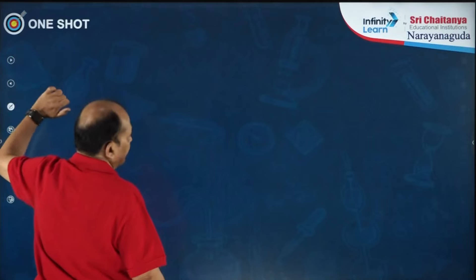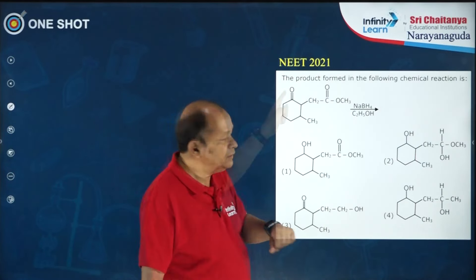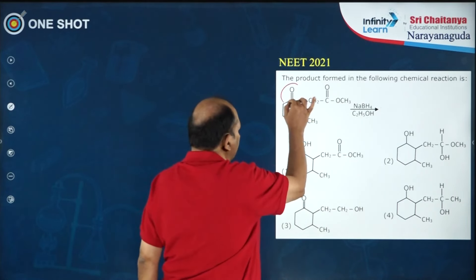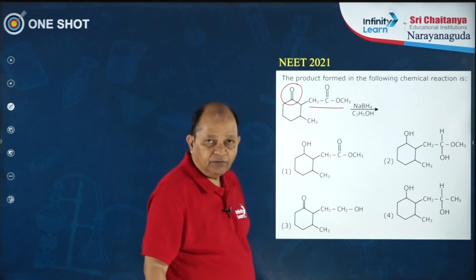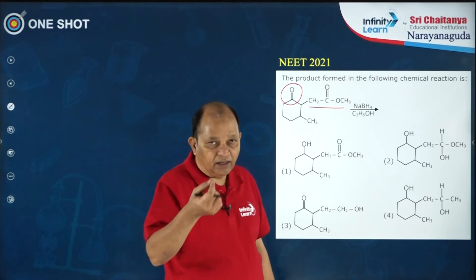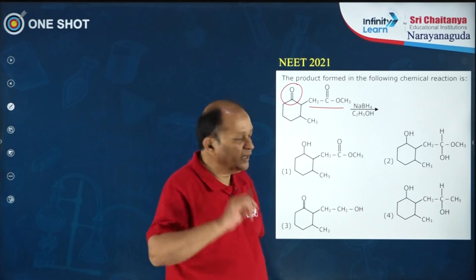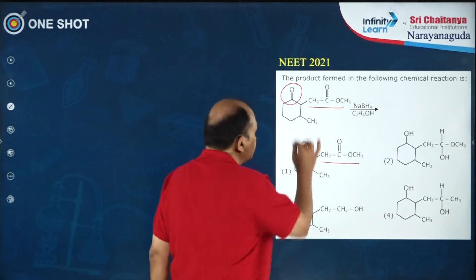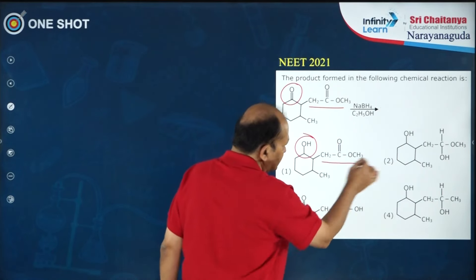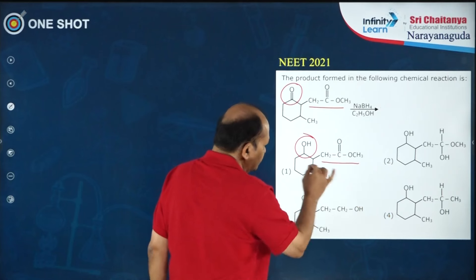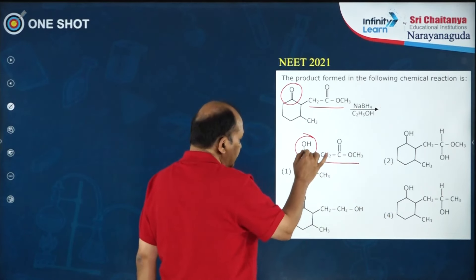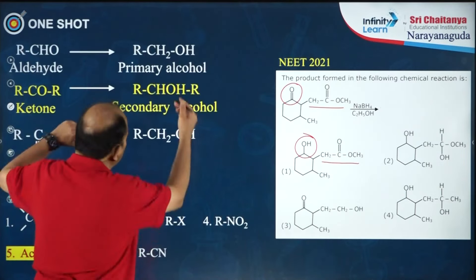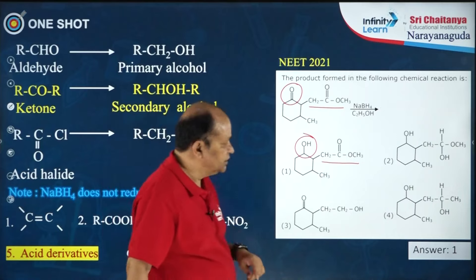An interesting question from NEET 2021: the product formed in the following reaction is — he gave a compound containing a keto group and an ester, treated with NaBH4. Since sodium borohydride cannot reduce an ester but can reduce ketone to secondary alcohol, only the keto group is reduced. In option 1, the ester is not reduced and only the keto group is reduced to a secondary alcohol — this is the correct option.